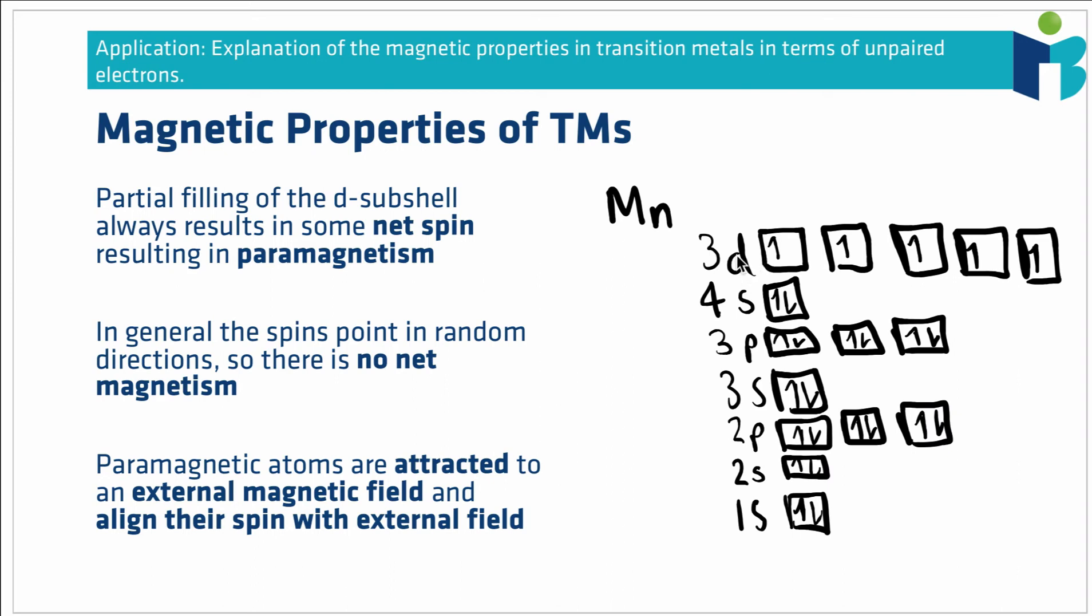However, when we get to the incomplete 3d subshell, we see here we just have five spins all pointing in the same direction, which means we have a net spin that is pointing upwards in this case. If we moved along to something like iron instead, and we just added one more electron, the electron goes here, we've still got a net spin, because although one of the spins in our 3d subshell is now cancelled out, we've still got four electrons all pointing in the same direction, with no electrons pointing in the other direction. So we've still got a net spin. And you'll find that as long as your d subshell is incomplete, and it isn't completely filled, you're always going to have a net spin.